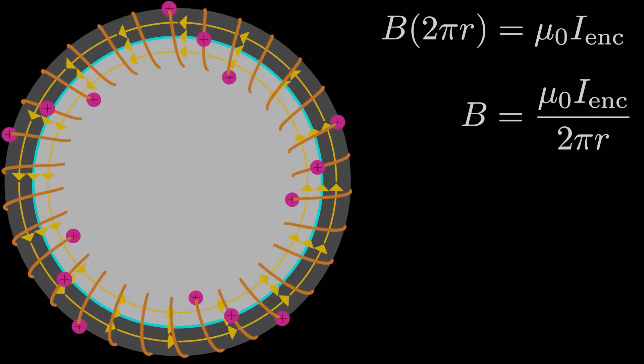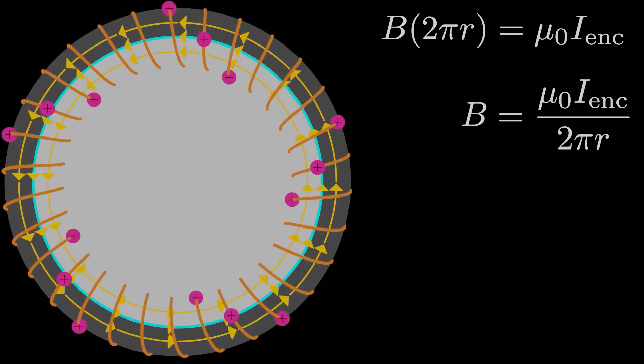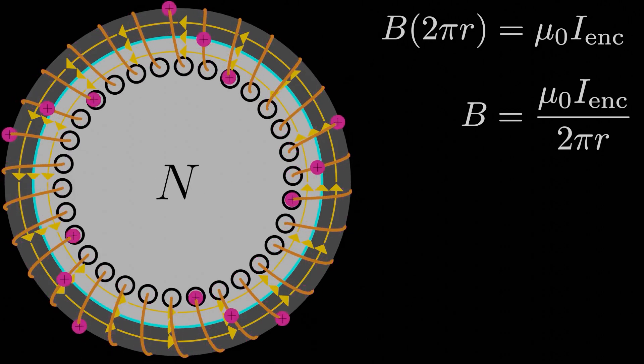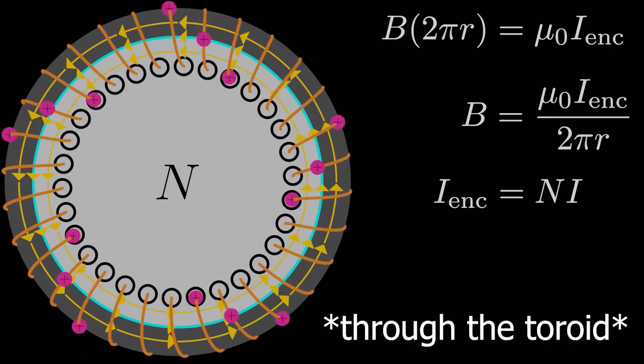So what is I_enclosed? It's not I, the current, through the toroid, because that current passes through the loop one time, but then it passes through again, and again, and again. If we call capital N the number of loops on our toroid, then capital N is the number of times the current passes through the Ampere loop as well. So I_enclosed is capital N times the current going through the solenoid as a whole.